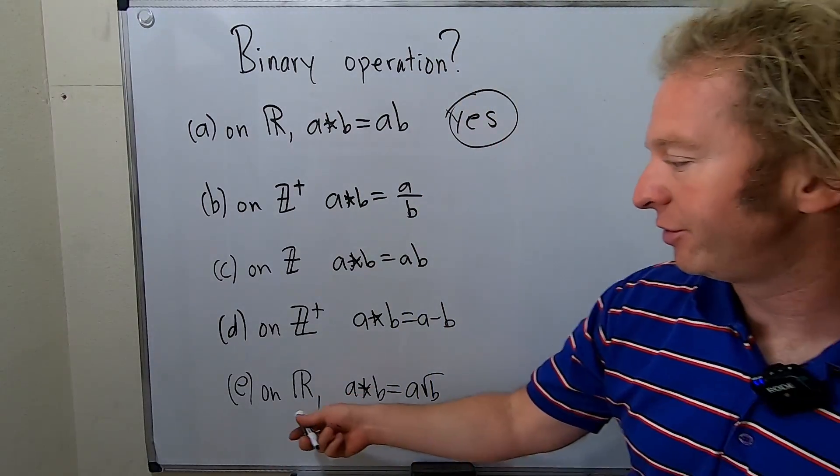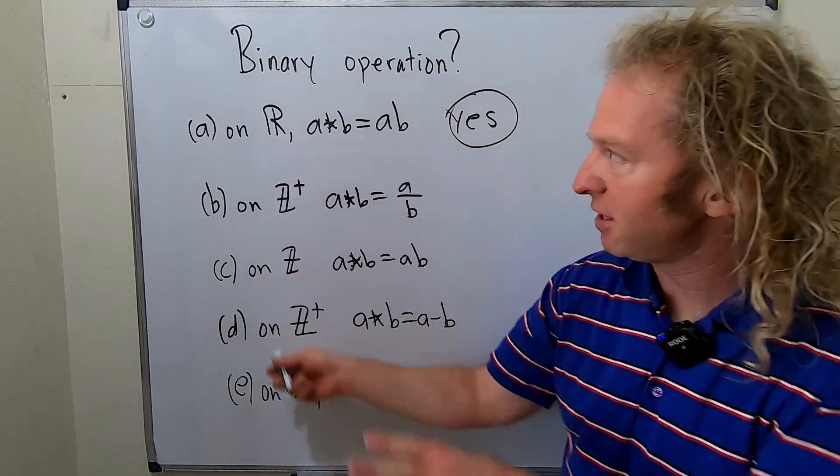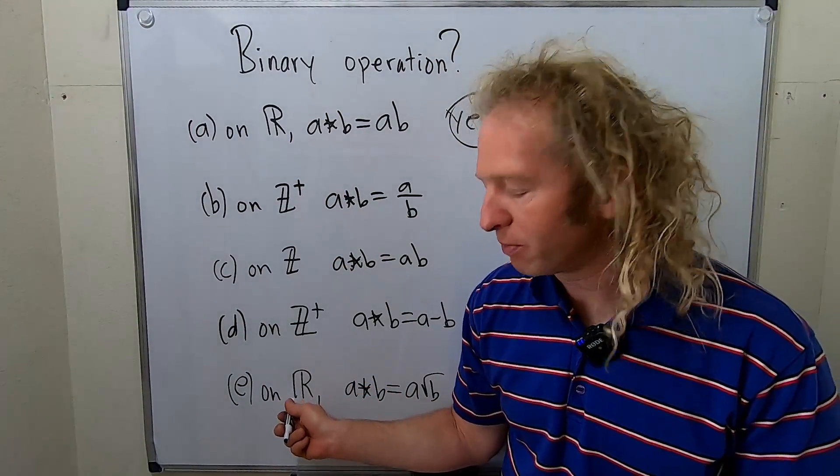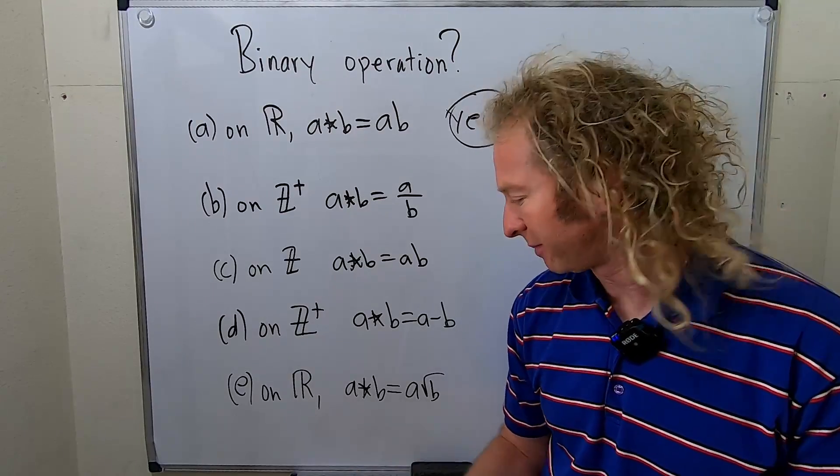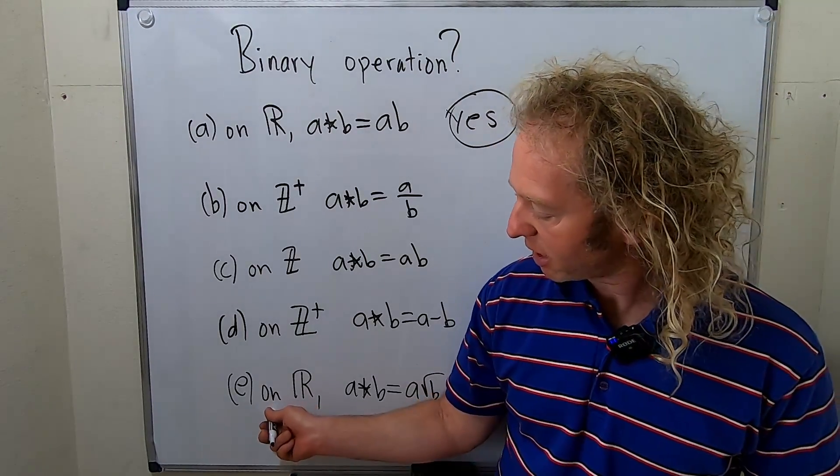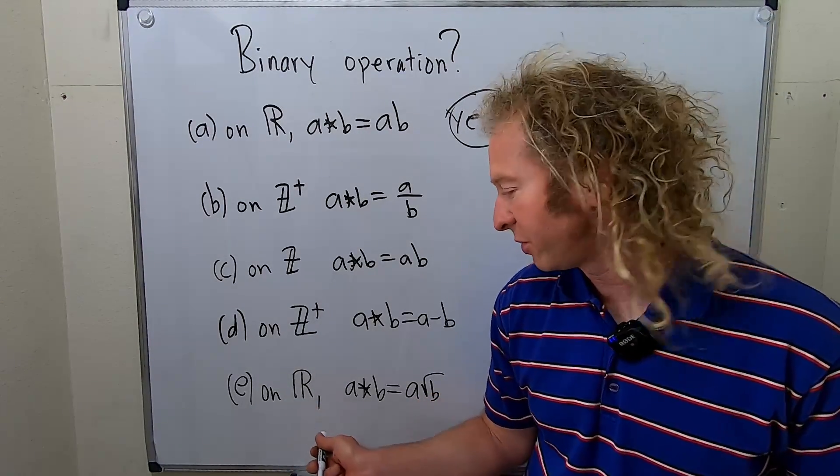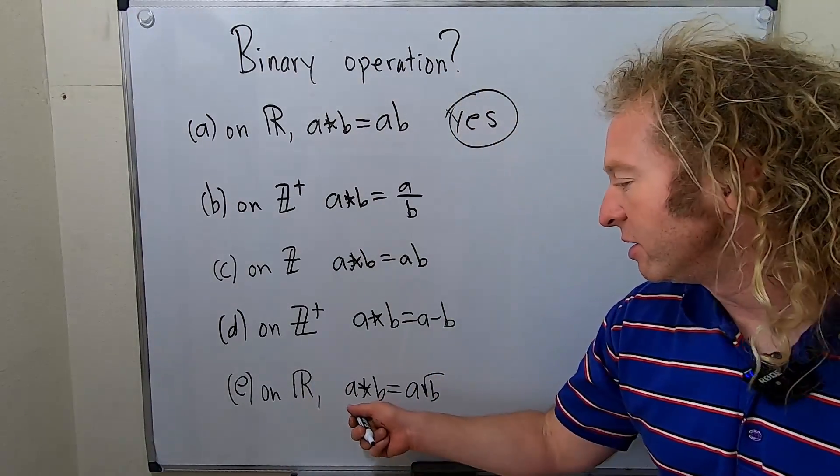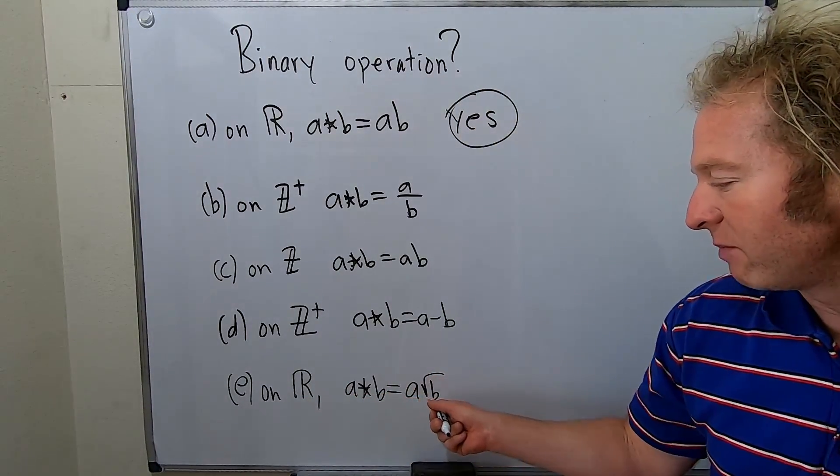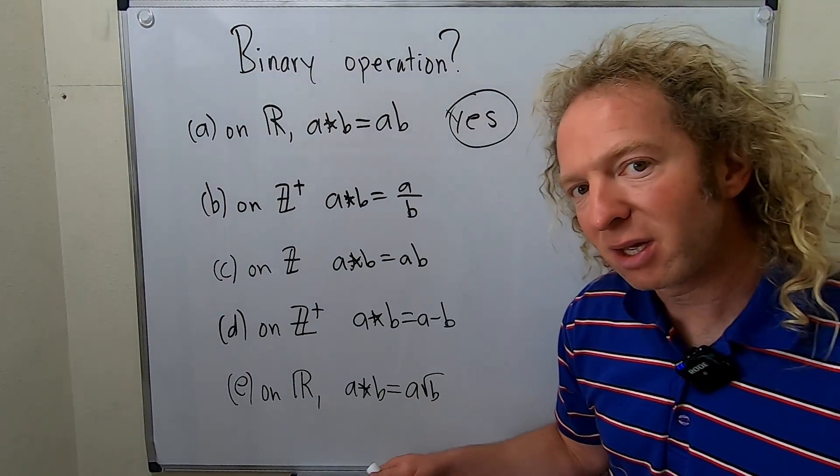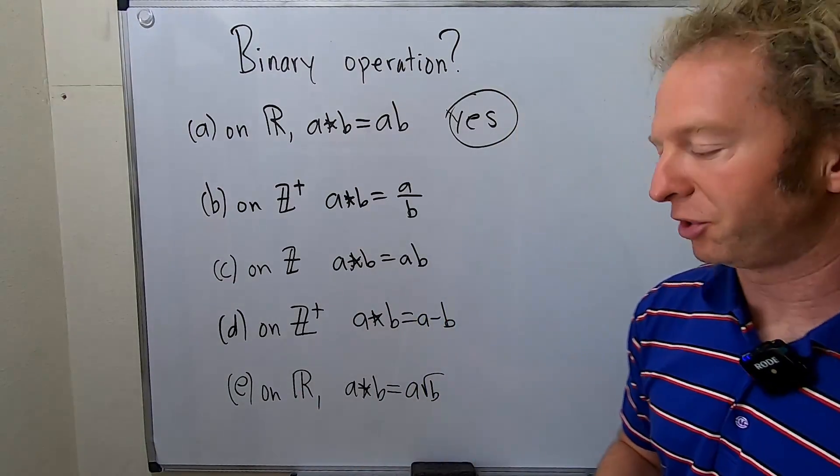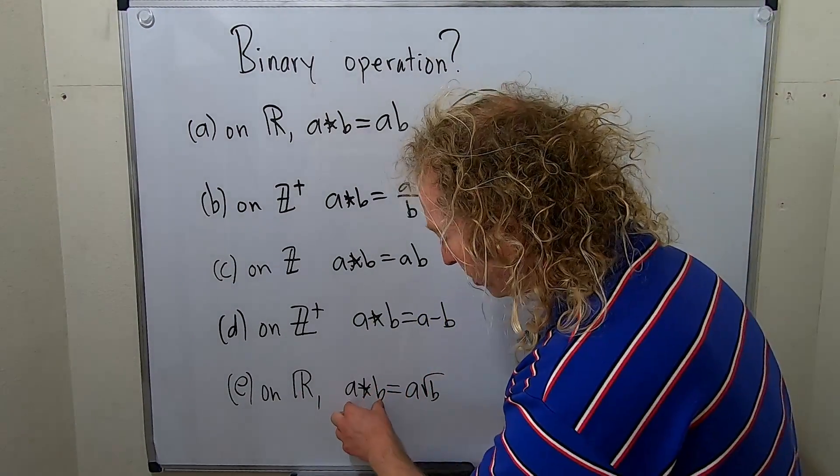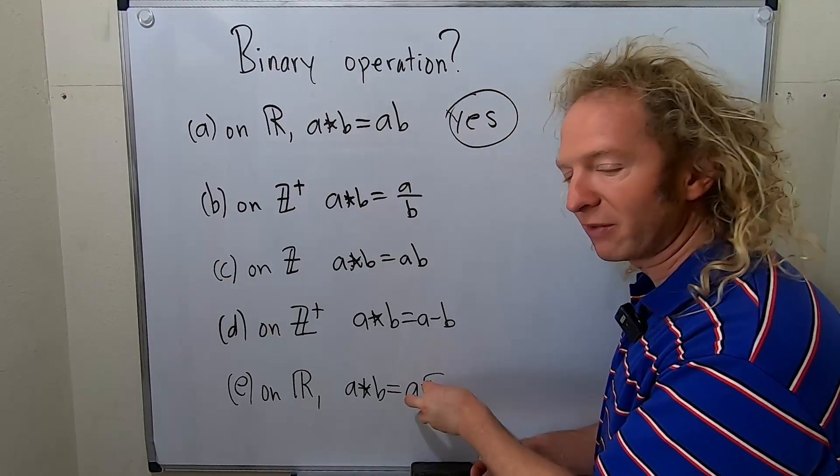Let's skip ahead to example E, just go out of order because perhaps this one is more instructive. Here again, the set is R, the set of real numbers. And the operation which we're trying to define is a star b equals a times the square root of b. So is this a binary operation on the set of real numbers? In other words, given any two real numbers, does this make sense and will it give us a real number?